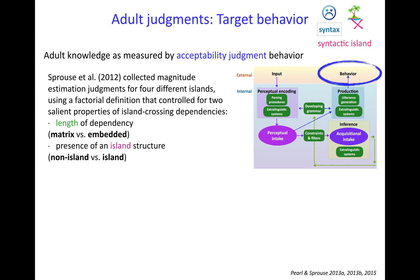They did that for four different island types using what's called a factorial definition of the stimulus. When you have a number of factors you can vary which one has which value, and that's what it means to have a factorial definition.